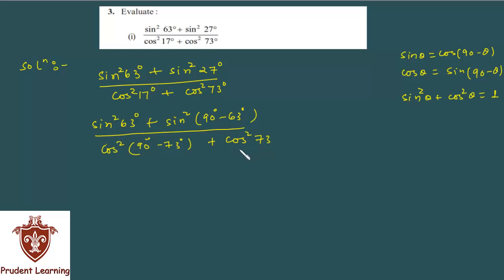So cos square 73 degree I have as such. Now, which implies in the numerator sin square 63 degree plus, you know sin 90 minus theta is what? Cos theta. Here sin square 90 minus 63 is what? Cos square 63 degree. This can be written as sin 90 minus 63 whole square, and then sin 90 minus 63 can be written as cos 63, and then this square is cos square 63 degree.